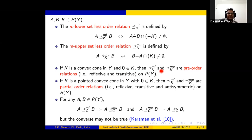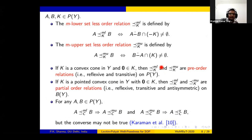Regarding the relation between the M-set-order relations and Kuroeva's set-order relations: the M-upper set-order relation implies the lower set-order relation introduced by Kuroeva, and the M-upper set-order relation implies the upper set-order relation introduced by Kuroeva. However, the converse may not be true. Examples of the converse part can be found in Karaman et al.